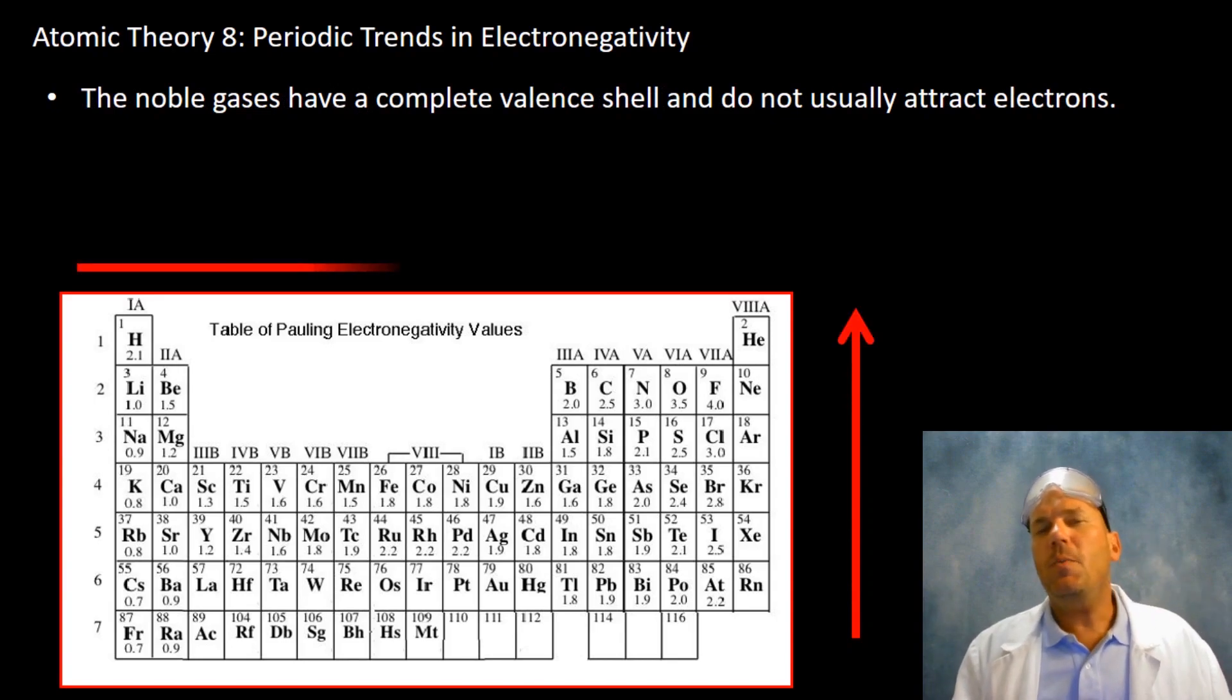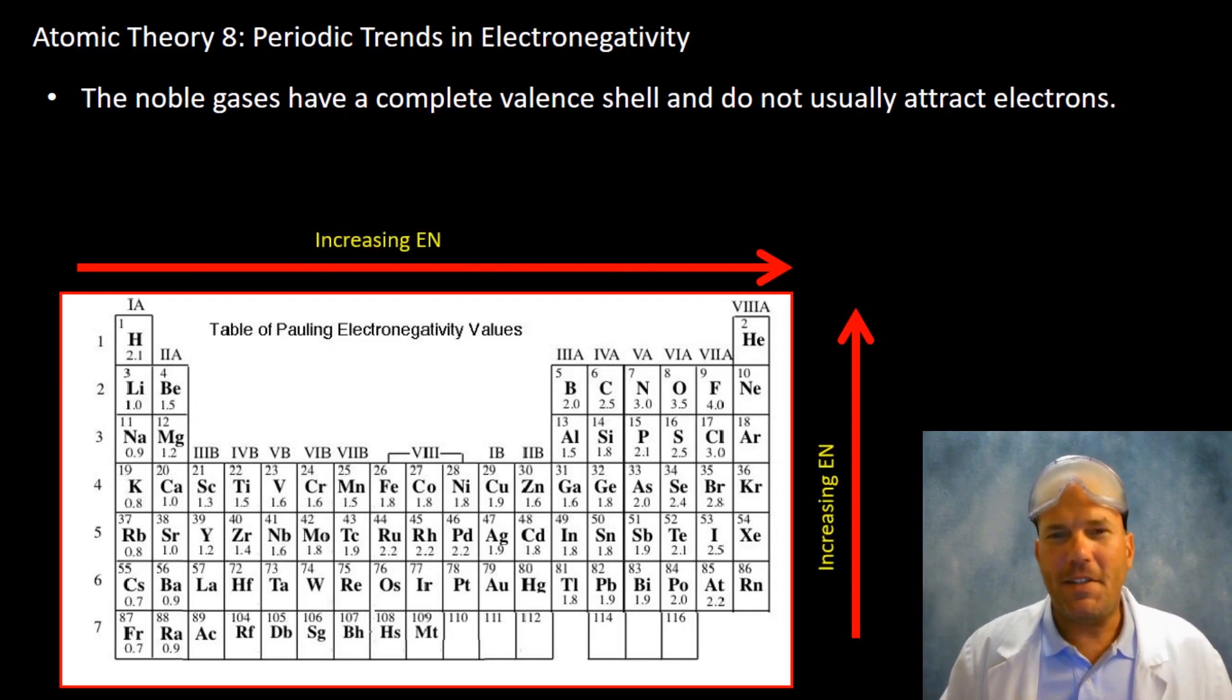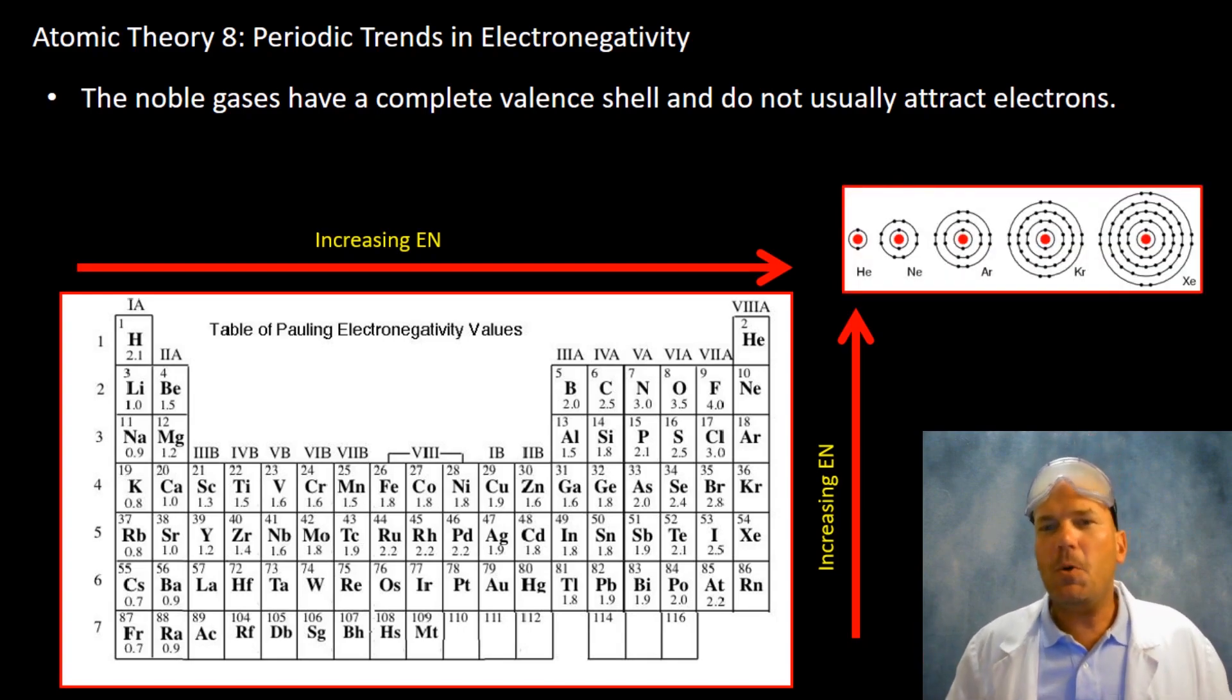So noble gases. There's no value on this scale. Well, Linus Pauling didn't forget about them. It's simply that noble gases already have a complete outer valence shell. Let's look at some Bohr models that show this. From helium all the way down to xenon, we see that all noble gases have a complete outer valence shell and are therefore, for the most part, unreactive.